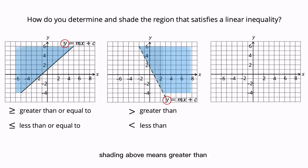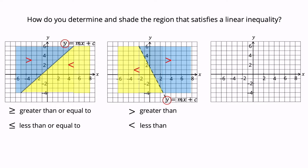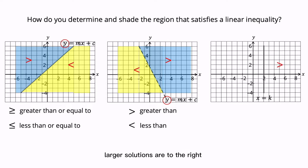Shading above means greater than, while shading below means less than. For a vertical line, larger solutions are to the right and smaller solutions are to the left.